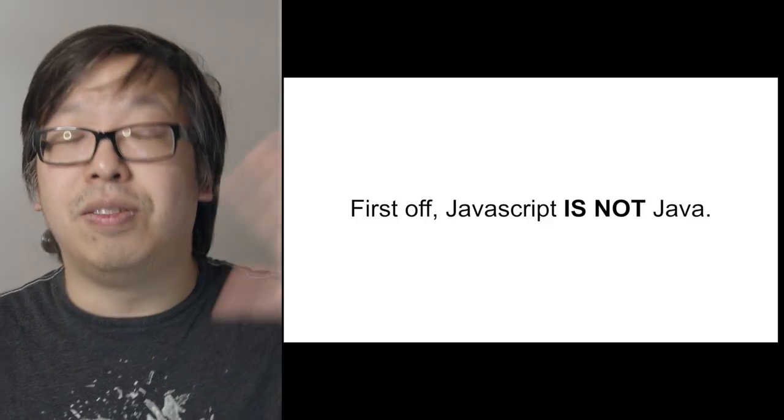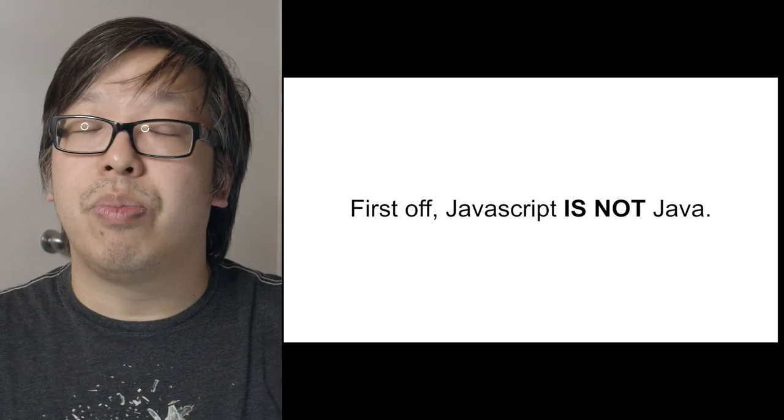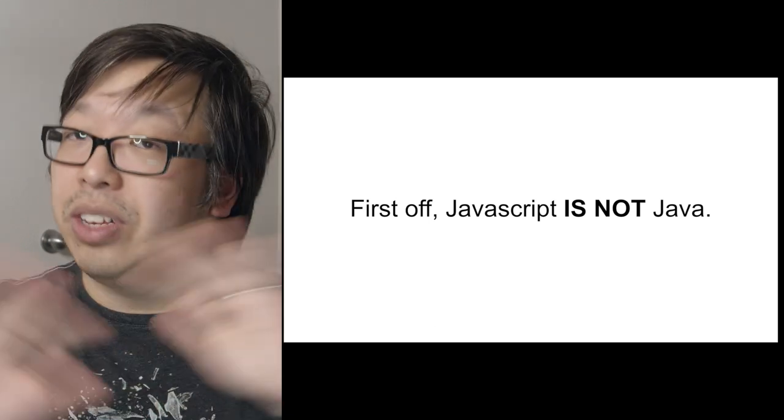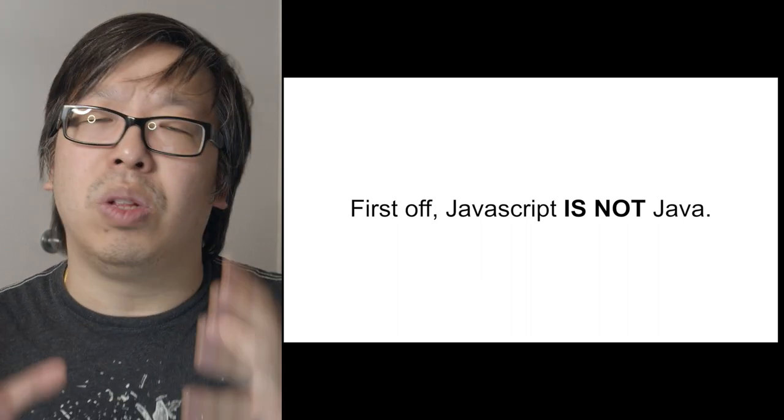One piece of confusion I want to clear up right off the bat is that JavaScript is not Java — they're not the same thing. When you're starting in software engineering it's easy to mix up these terms. I've heard students in interviews say they've learned both Java and JavaScript when they actually didn't do any JavaScript. So right off the bat: JavaScript and Java are completely different languages. They adopt very different programming paradigms. There are a couple of similar-looking things like if statements and loops, but ultimately they are completely different languages.